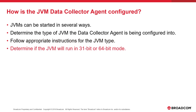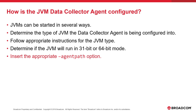Since a JVM can run in 31-bit or 64-bit mode, so must the agent — two versions, a 31-bit and a 64-bit version, are provided by SysView, and the agent used must match the JVM runtime. The AgentPath option will need to be inserted into the JVM configuration options to point to the installed agent shared object. After the JVM configuration has been updated, the JVM should be started to ensure there are no errors.